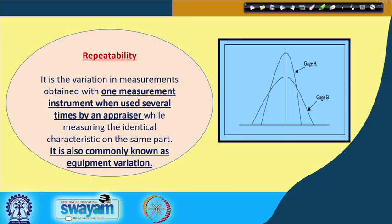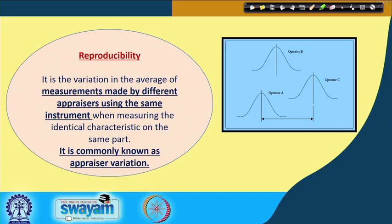The first important term is repeatability, also called equipment variation. This is the variation in measurements obtained with one measurement instrument when used several times by an appraiser while measuring the identical characteristics of the same part. In the figure, there are two bell-shaped curves — Gauge A and Gauge B. Gauge A is closer to the target value, while Gauge B has a wider spread, indicating affected repeatability.